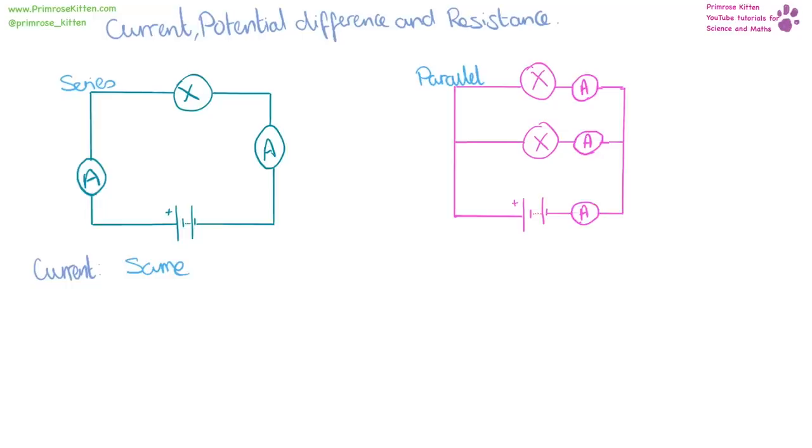However, in a parallel circuit, the current that comes out of the battery, all of this is going to pass the first ammeter. Move down here. And then when it gets to this point, it has two choices of where to go. It can go this way past this ammeter, or down here and this way past this ammeter. So the current gets split.